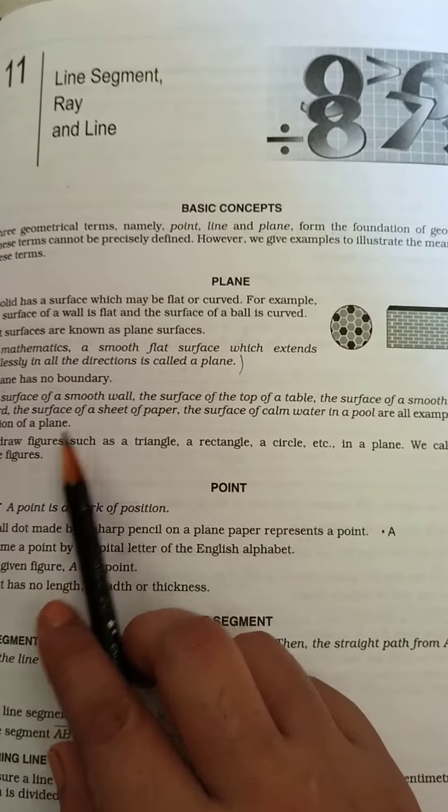Look, a small dot made by a sharp pencil on a plane paper represents a point. Point A—here is a point made, it is named as point A.